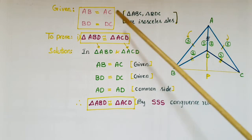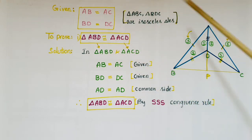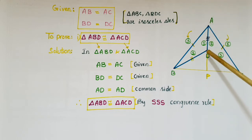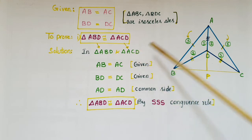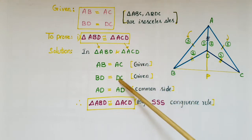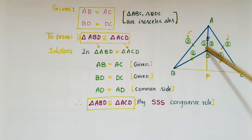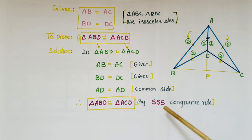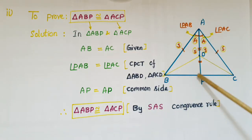Now, AB is equal to AC and BD is equal to DC because triangle ABC and triangle BDC are isosceles triangles. To prove triangle ABD is congruent to triangle ACD: in triangle ABD and triangle ACD, AB = AC (given), BD = DC (given), and AD is the common side. So by SSS congruence rule, triangle ABD is congruent to triangle ACD.